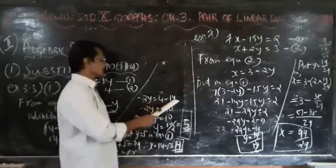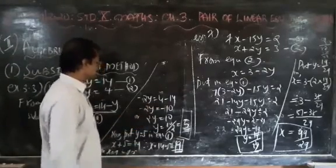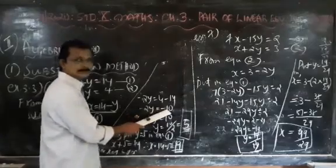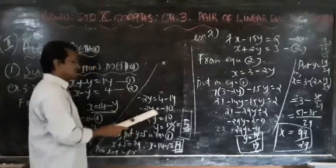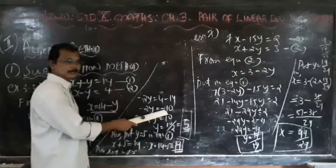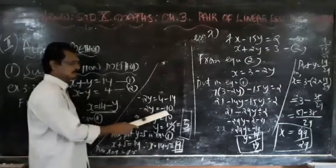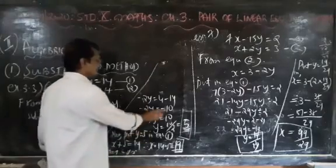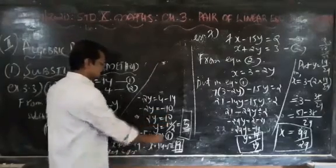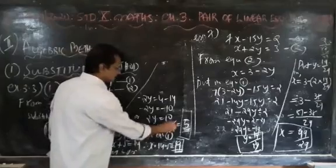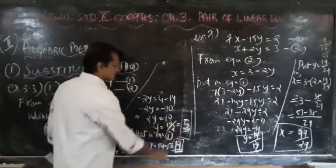Substituting gives us: 14 minus y minus y equal to 4, so 14 minus 2y equal to 4. Then minus 2y equal to 4 minus 14, which gives minus 2y equal to minus 10. Removing the minus sign from both sides, we get 2y equal to 10, so y equal to 10 divided by 2, that is y equal to 5.